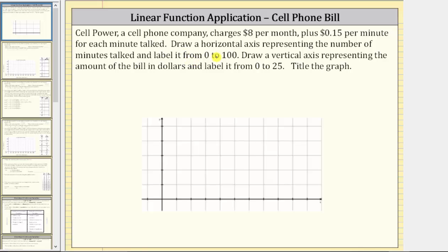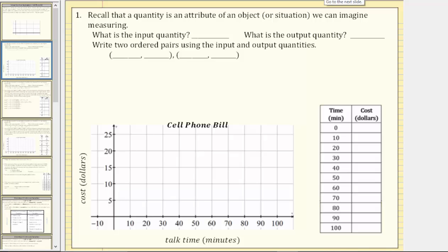Cellpower, a cell phone company, charges $8 per month plus 15 cents per minute for each minute talked. Draw a horizontal axis representing the number of minutes talked and label it from zero to 100. Draw a vertical axis representing the amount of the bill in dollars and label it from zero to 25. The graph has talk time in minutes along the horizontal axis scaled by 10s, cost in dollars along the vertical axis scaled by 5s, and a title.